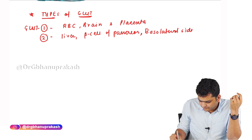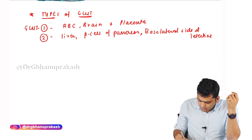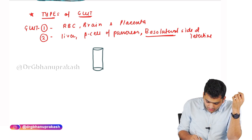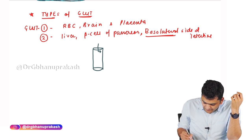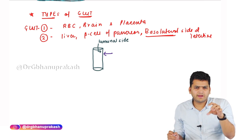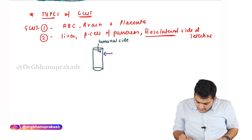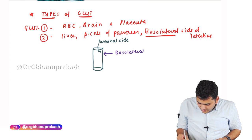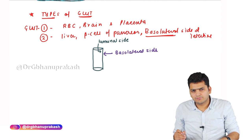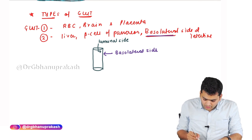To understand the basolateral side: if you make a cross section of the intestine, the wall facing the lumen is called the luminal side, and the wall visible from outside is called the basolateral side. On the basolateral side we have GLUT 2.